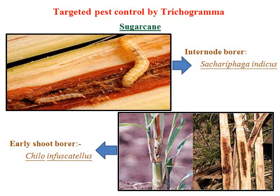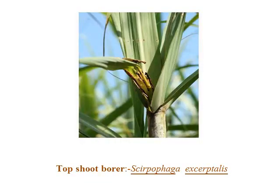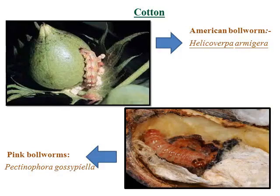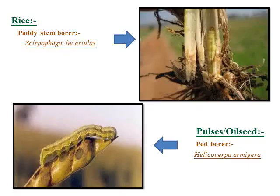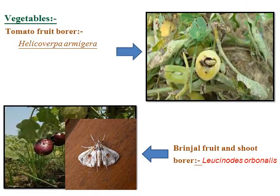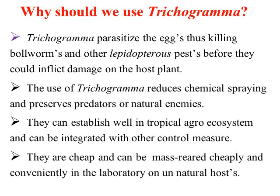These are some pests targeted by Trichogramma, and we can obtain up to 100% control against these pests. These include sugarcane internode borer Chilo sacchariphagus, early shoot borer Scirpophaga excerptalis, top shoot borer, American bollworm in cotton, Helicoverpa armigera, Earias vitella, Earias insulana — common species of cotton. Also rice paddy stem borer controlled by the japonicum species, Helicoverpa in pod borer, and even the very dangerous species Leucinodes orbonalis can be controlled with Trichogramma.